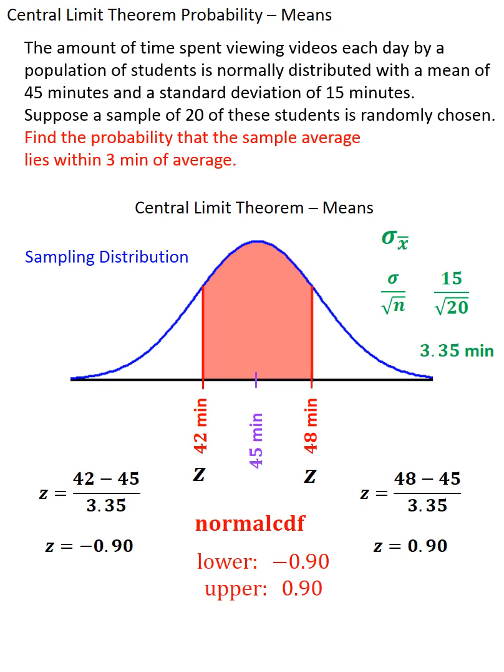And whatever app or machine you're using will give you 0.632. This means that there is about a 63% chance that my 20-person sample average will be between 42 and 48 minutes for this particular population.